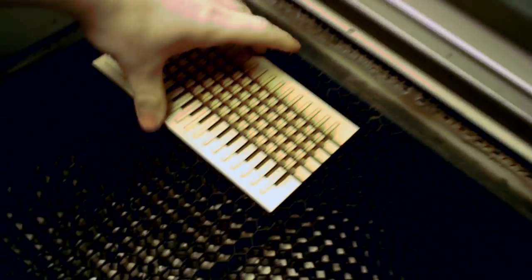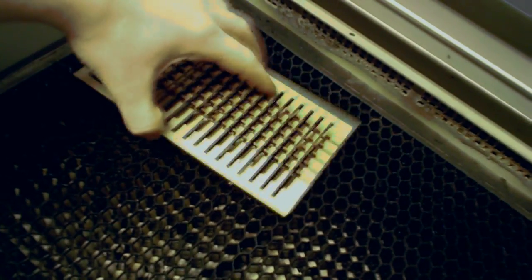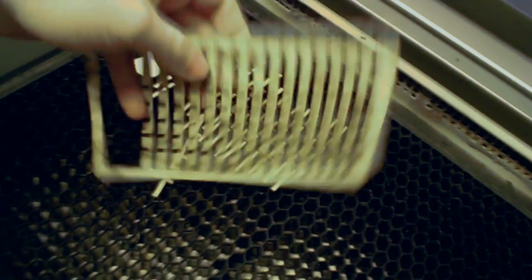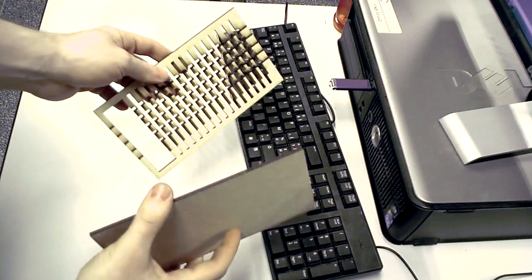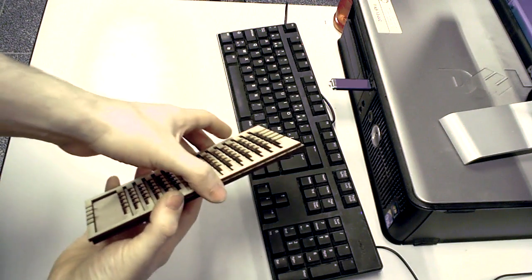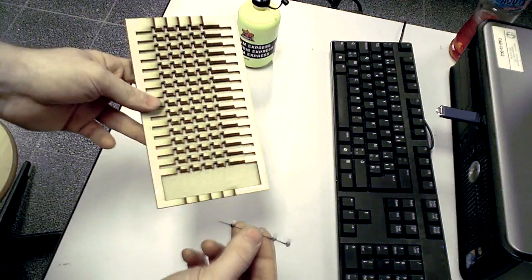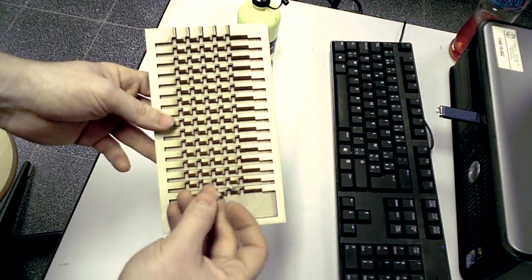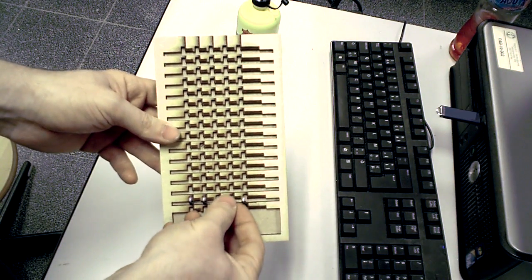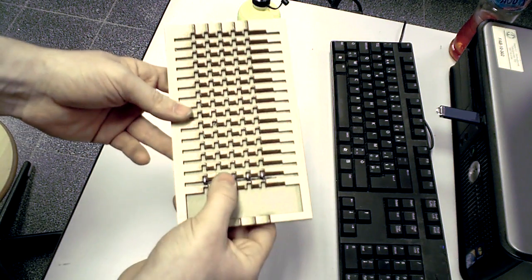This jig consists of two parts. This upper part keeps the distance between the building blocks constant. And the bottom part is just a plate that prevents the building blocks from falling through. Both parts are glued together and the jig is ready. When a building block is placed in the jig, it will firmly stay in place.